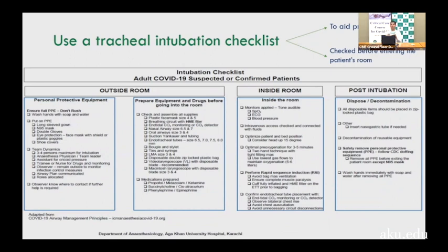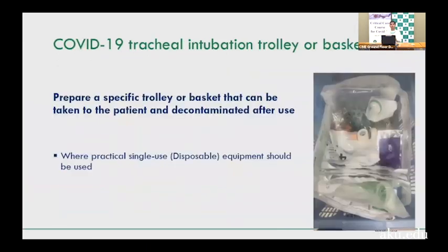An intubation checklist aids preparedness and is checked before entering the patient room. It ensures all equipment is ready and preparation for difficulty is done. A dedicated COVID intubation basket or trolley should be prepared, using mostly disposable, single-use equipment. Used equipment goes into a biohazard or zip-lock bag inside the room, reducing transmission risk to other personnel.